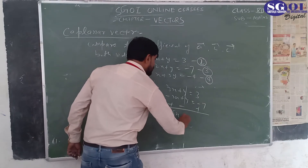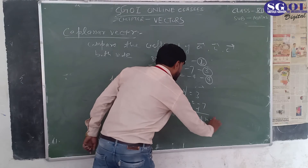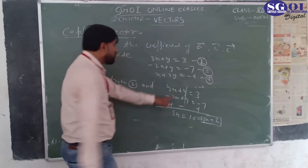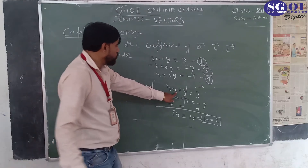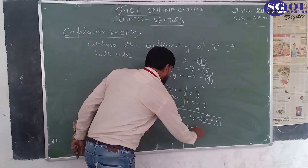This gives 5x equals 10, which implies x equals 2. Substituting back, we get y equals minus 3.